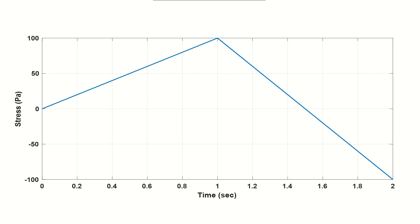In this video we're going to learn about transient analysis and multiple load steps applied to a model. We're going to create a very simple block, fix it at one end, and apply a ramped load to the other end. There's no stress at time zero; in ramped mode it goes from zero to 100 pascal stress on the top surface, then from second one to second two it goes from 100 to minus 100 pascal normal stress on the top surface of the block.